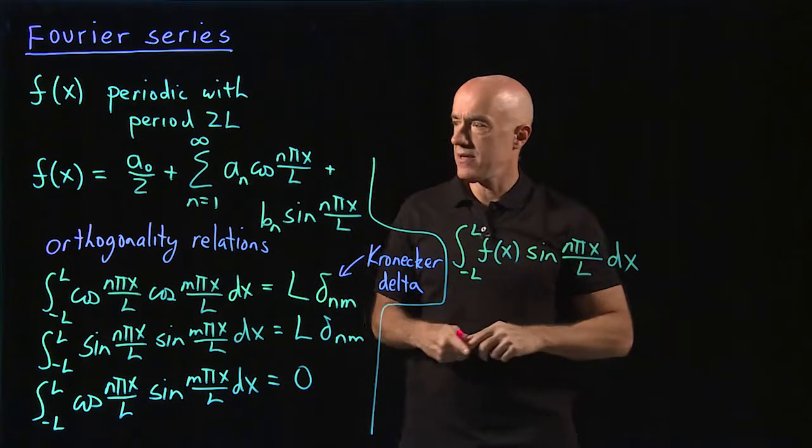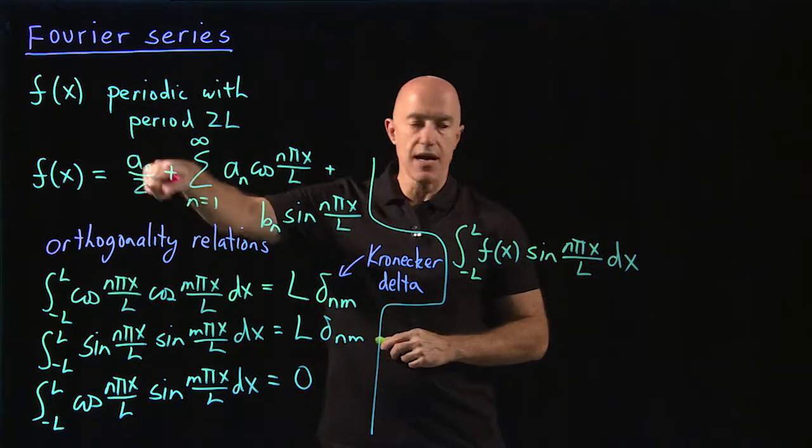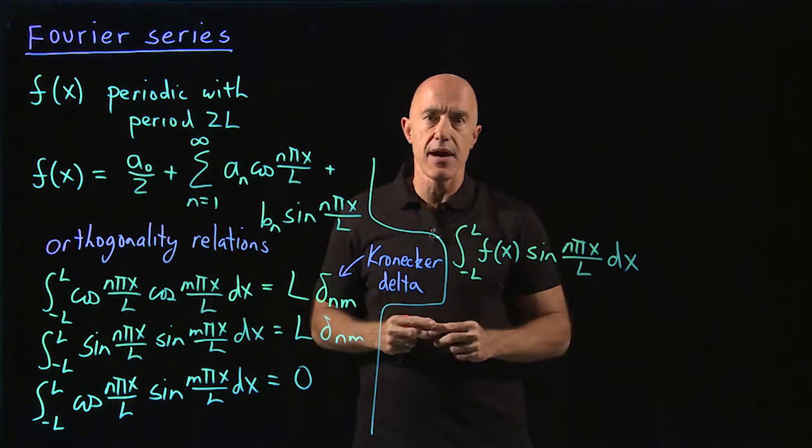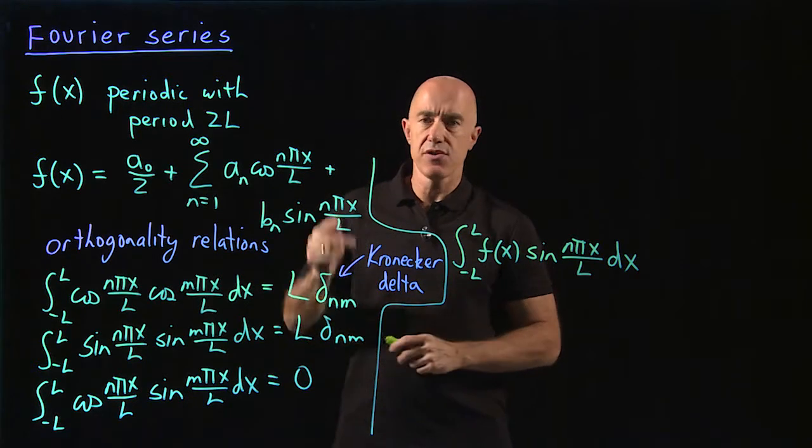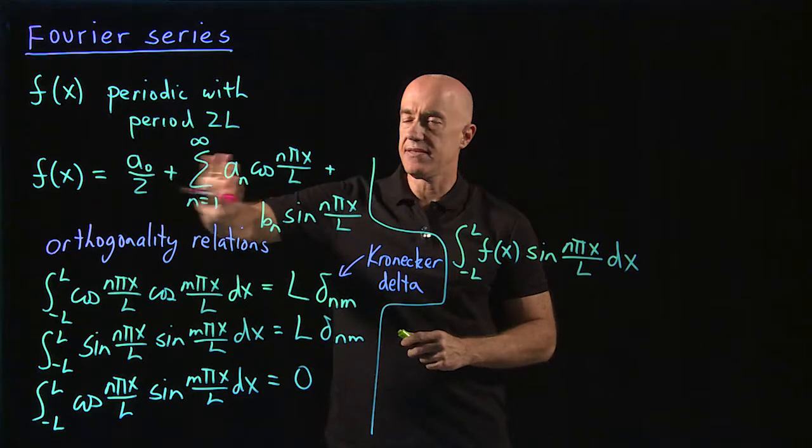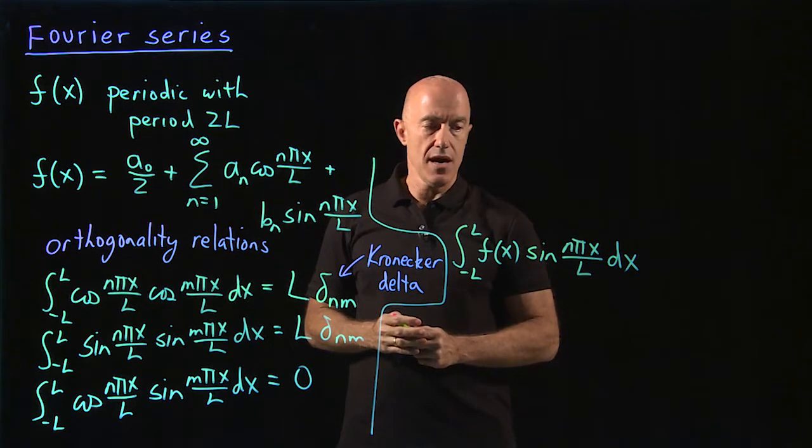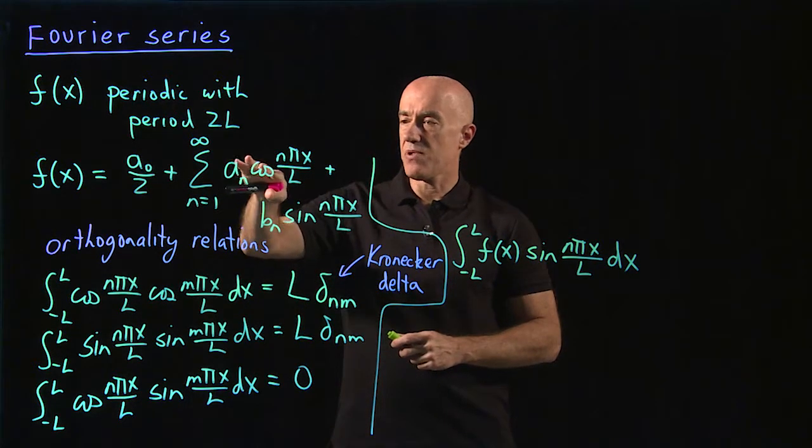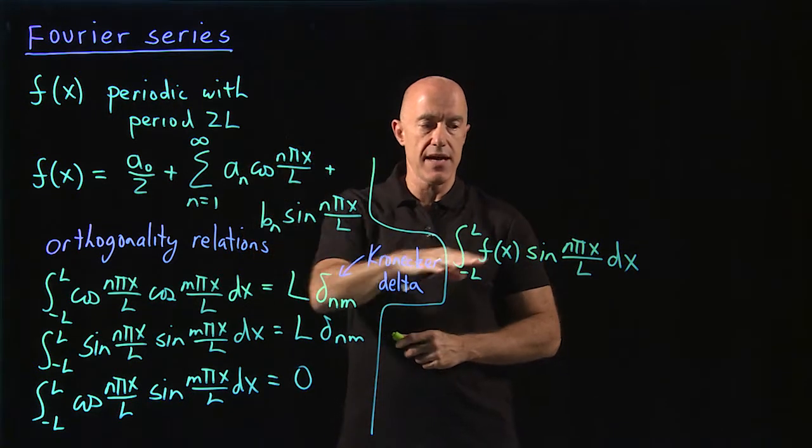And then what would happen? So if we multiply this constant by sine n pi x over l and integrate dx, we would get 0. That term would go to 0.